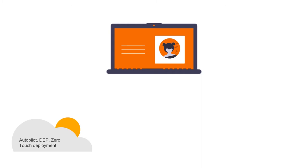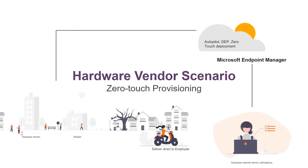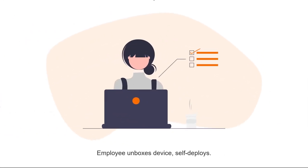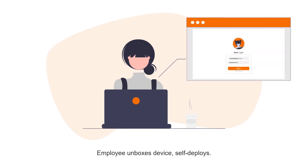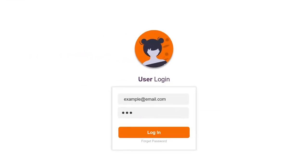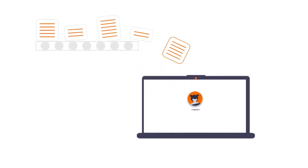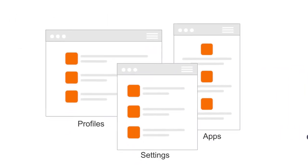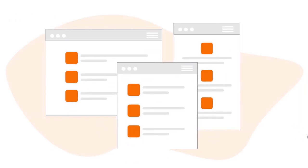The device can be shipped directly to the end user. The end user will turn on the device, go through the region settings, specify their email and password, and the rest will be downloaded automatically — assuming they have a good internet connection. All profiles, apps, settings, etc. will be downloaded through the autopilot configuration.